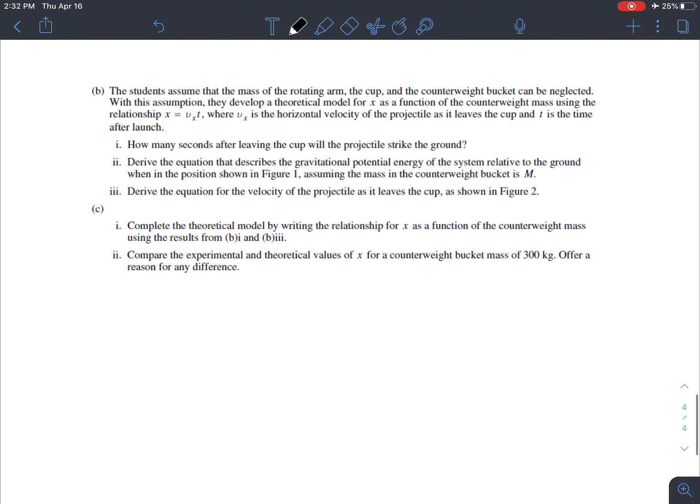So, in part B, how many seconds after leaving the cup will the projectile strike the ground? Well, it's being launched horizontally, so in the vertical direction since it's a horizontal launch, that means the initial vertical velocity is zero. In other words, we might as well be dropping this thing if all we're interested in is the time. Then we just need to set that initial vertical velocity to zero and find the time that way.